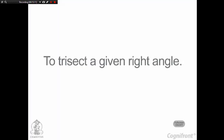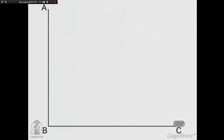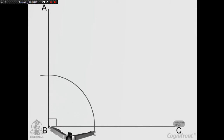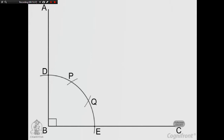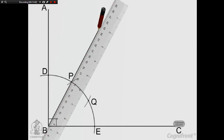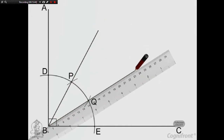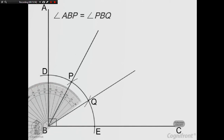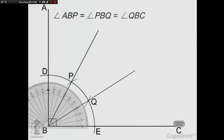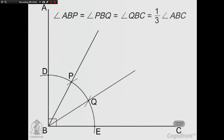To trisect a given right angle: let ABC be the given right angle. With center B and any radius, draw an arc cutting AB at D and BC at E. With the same radius and centers D and E, draw arcs cutting arc DE at points Q and P. Draw lines joining B with P and Q. Lines BP and BQ trisect the right angle ABC, thus angle ABP = angle PBQ = angle QBC = (1/3) × angle ABC.